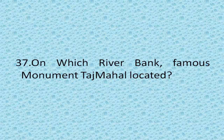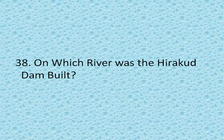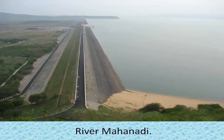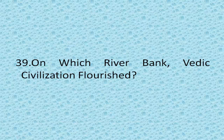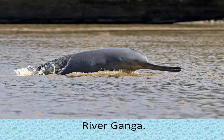On which river bank is the Taj Mahal located? River Yamuna. On which river was the Hirakud Dam built? River Mahanadi. On which river bank did Vedic civilization flourish? River Saraswati. Which Indian river is the home of freshwater dolphins? River Ganga. Thank you. Please do subscribe to my channel for more GK Questions and Answers. Thank you.